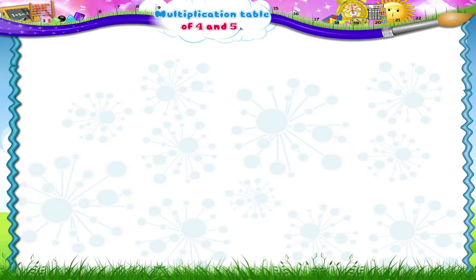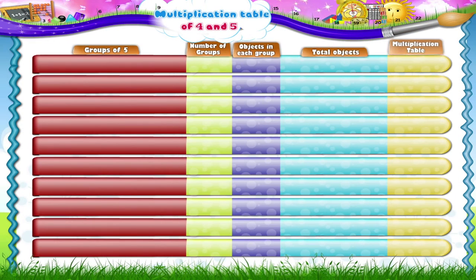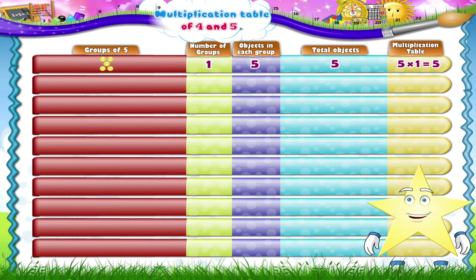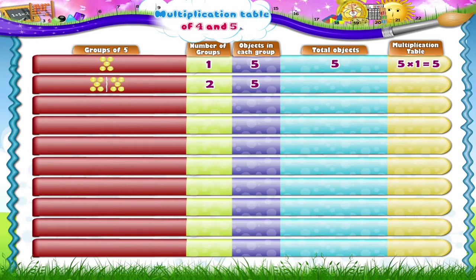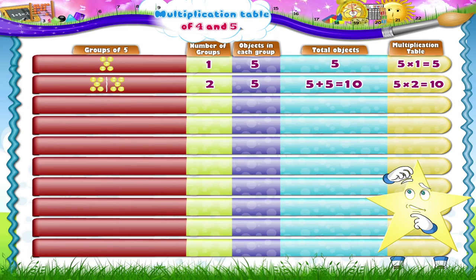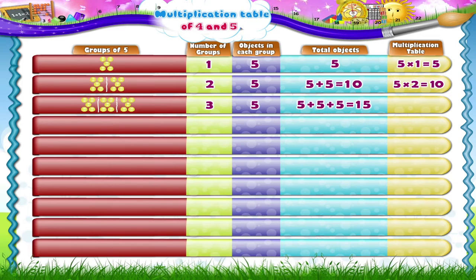One group of five beads makes a total of five beads. Here is a second group of beads, Starry. How many beads are there now? Yes, two groups of five beads make a total of ten beads. What about three groups of five beads, Starry? Three groups of five beads make a total of fifteen beads.